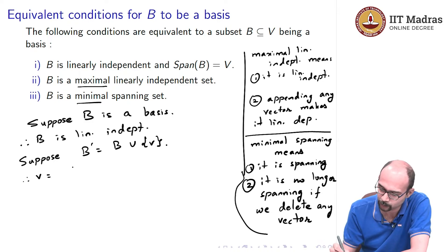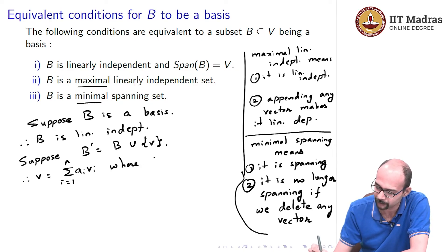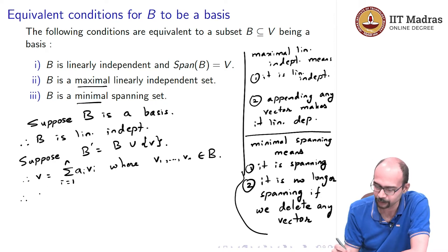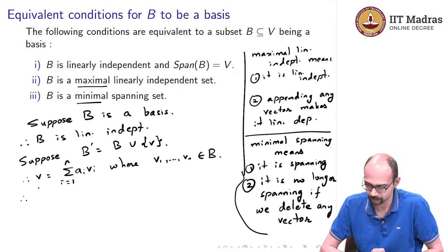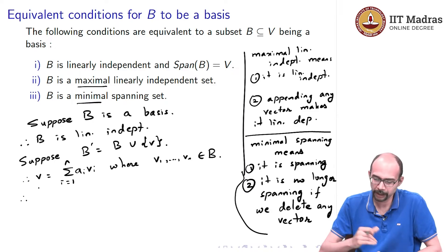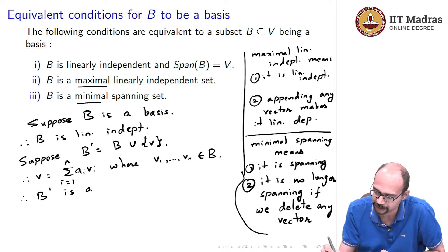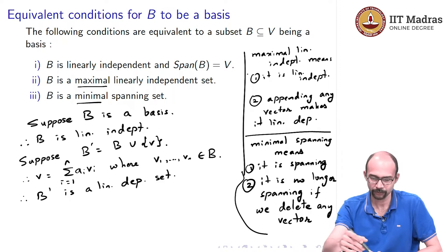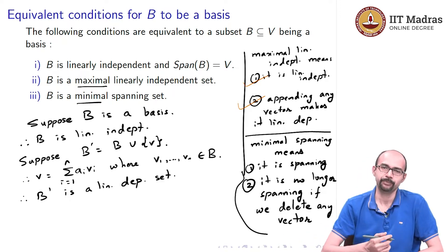Therefore, v is a linear combination of some elements v_i, so in particular it is a linear combination of the other elements in B prime. So B prime cannot be linearly independent — B prime is a linearly dependent set. So we have checked that it is maximal linearly independent. We have checked conditions 1 and 2, and both of these are true for a basis.